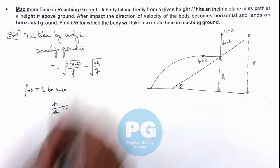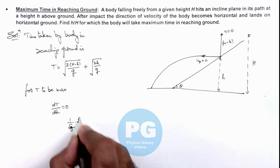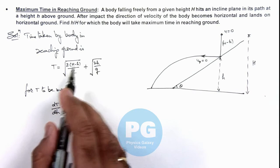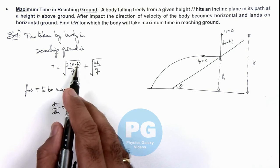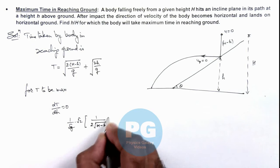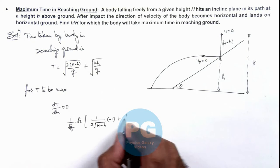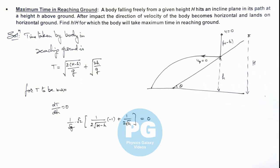If we differentiate this expression, we can take 1 by root g multiplied by root 2. Inside root of H minus h if we differentiate, this will be 1 by 2 root h, and this should be equal to zero.